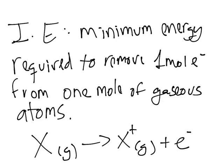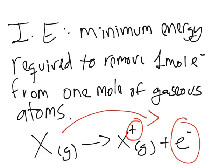That equation pretty much sums up the definition. We're taking out this electron. It was a neutral atom, a neutral gas. We take out one mole of electrons, so we make that gas positive. We make it a cation.